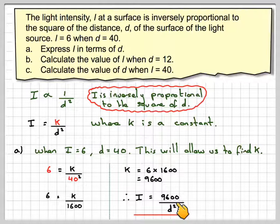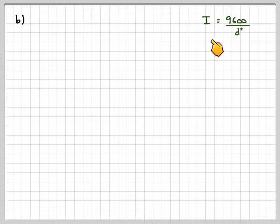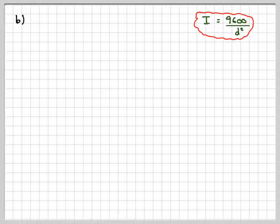Therefore, I will be 9,600 over D squared. So this becomes our formula, which will allow us to answer parts B and C. We're writing our formula down: I is 9,600 over D squared.